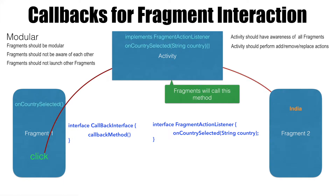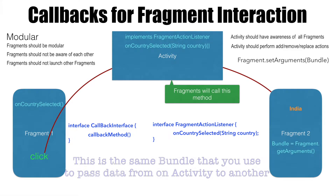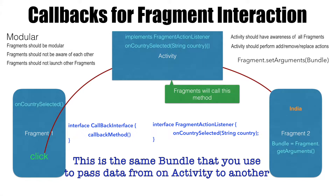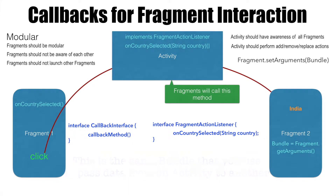Now the question is how we will pass the value from the activity to Fragment2. For that, Fragment has a method called setArguments. We set the values into a Bundle and pass that Bundle to the fragment. And inside the fragment, we can use fragment.getArguments, and from the arguments we can read whatever value was passed from the activity to the fragment.